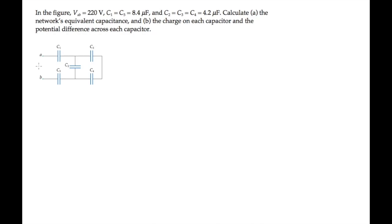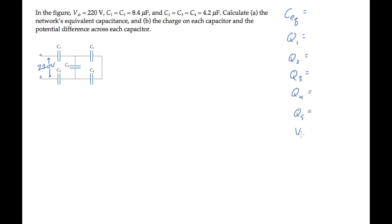There are a lot of things to calculate in this problem, so we'll take them one at a time. We're given this voltage and all the capacitance values, and we're asked to calculate in Part A the equivalent capacitance for the whole circuit, and in Part B the charge Q and the voltage V on and across each of the capacitors.